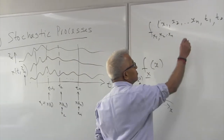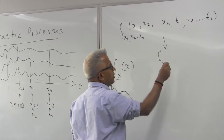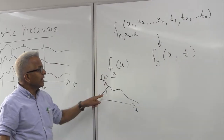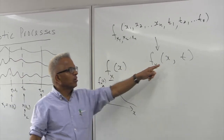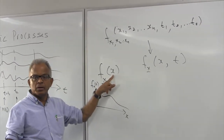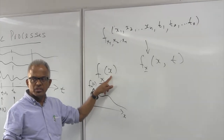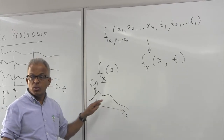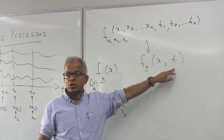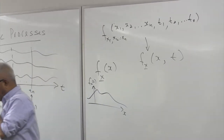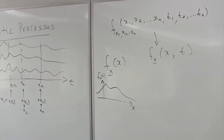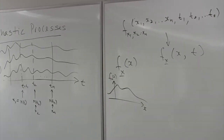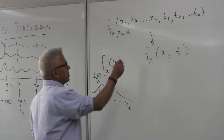The simplest characterization is using the first order density function — just take one random variable at some time instant t. This is going to be a function of both the variable x (which represents, if it is noise, the voltage) and it will have its own density function. But that density function could be changing from time to time. This is called the first order characterization.